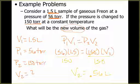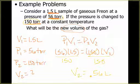The only thing you have to be careful of here is that the units are the same on both sides. If they give me two pressure units, they both have to be the same — they don't have to be any particular unit, they just have to match. So if one pressure had been given in torr and one in atm, you would have to convert one using those conversion factors we just looked at.